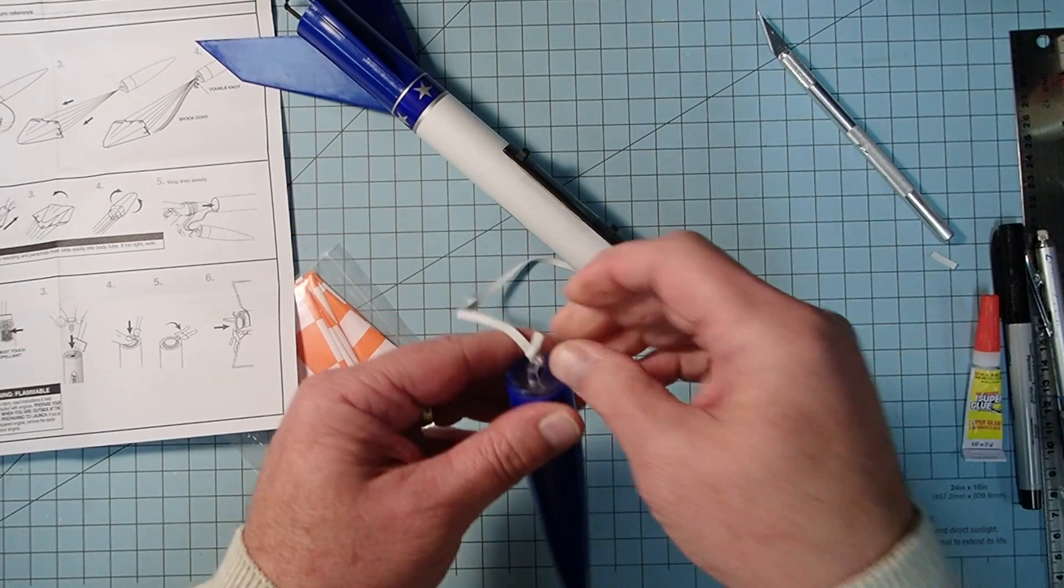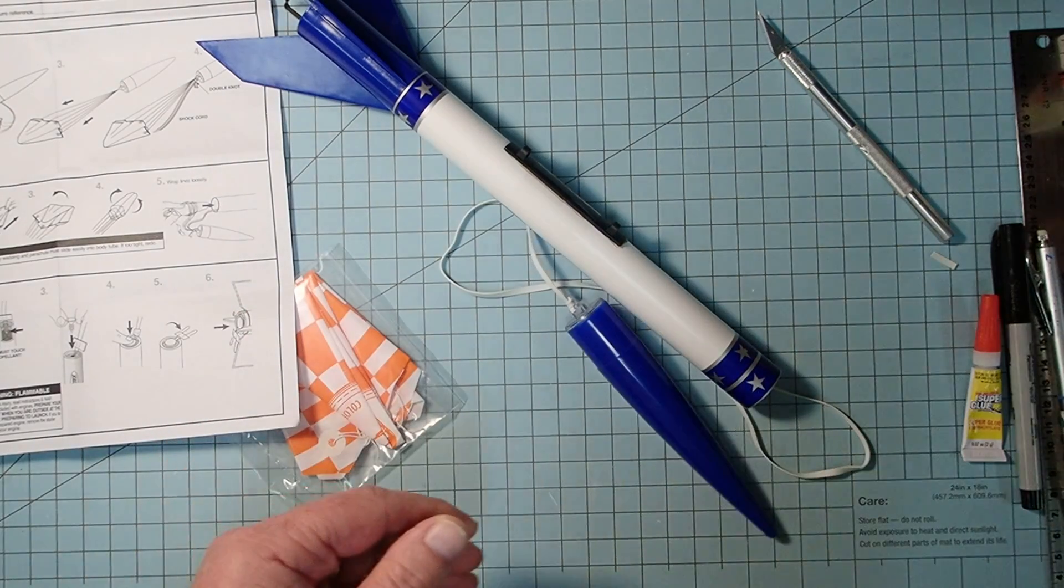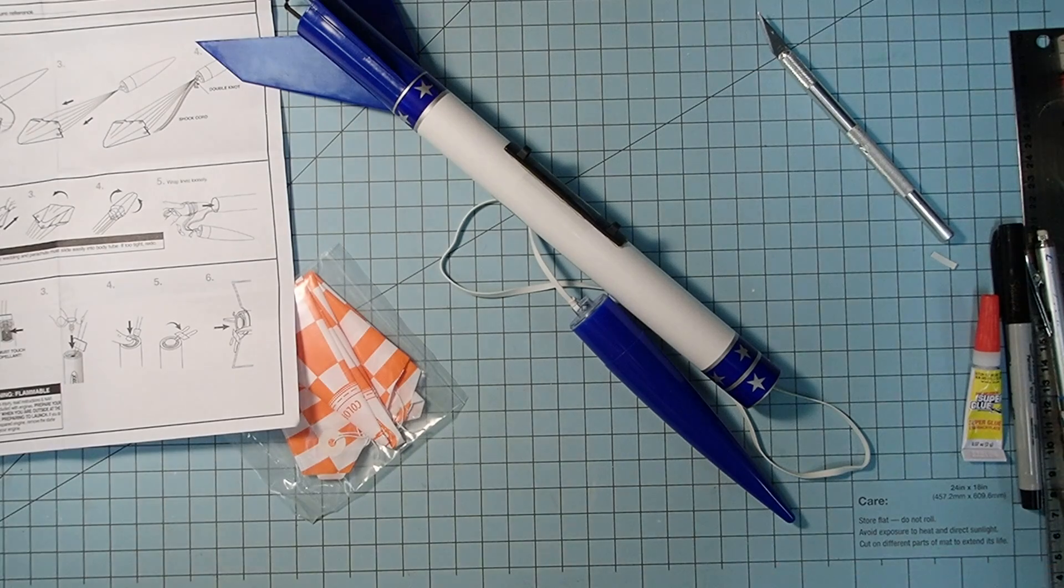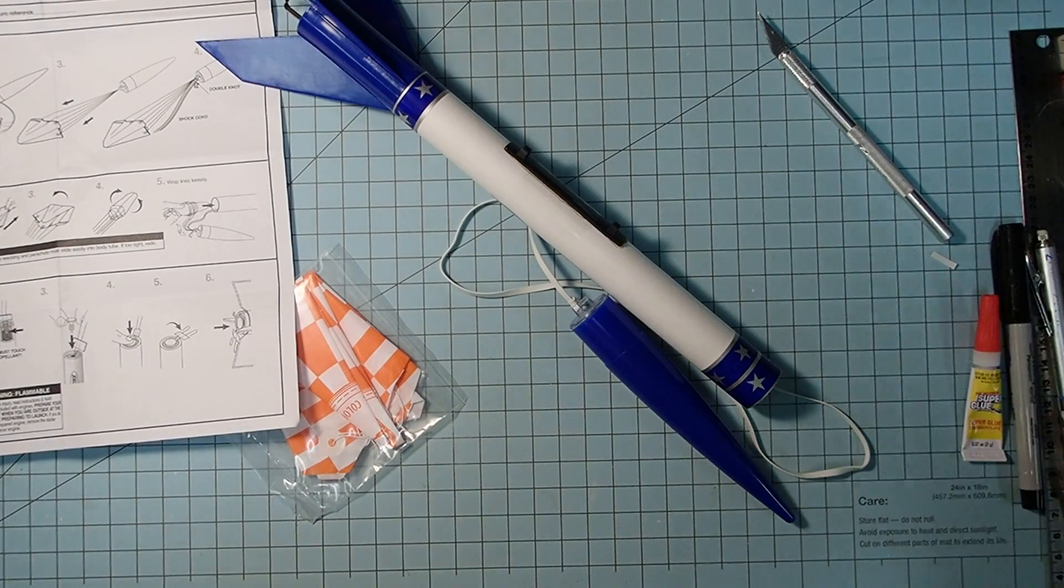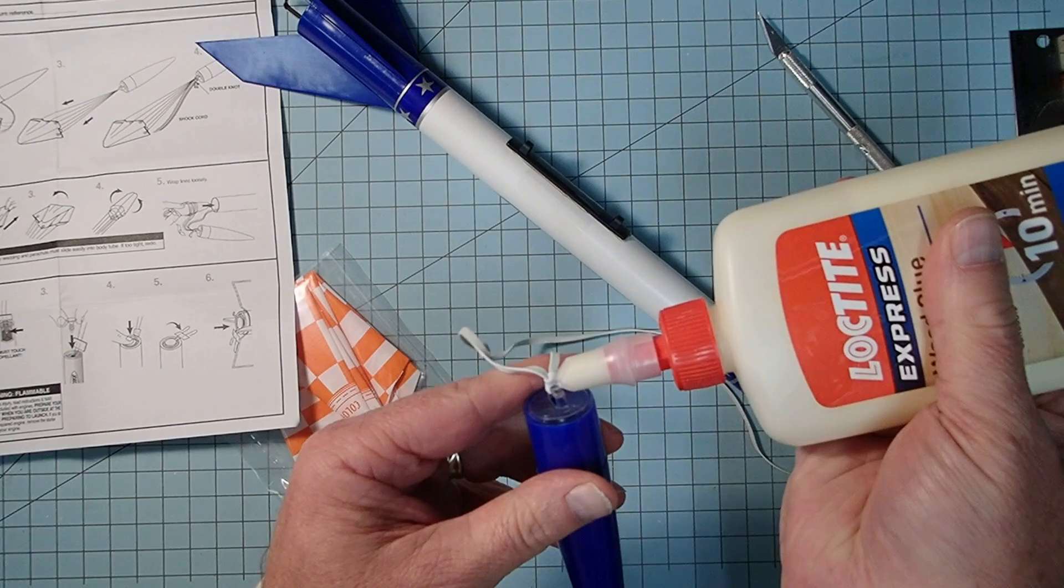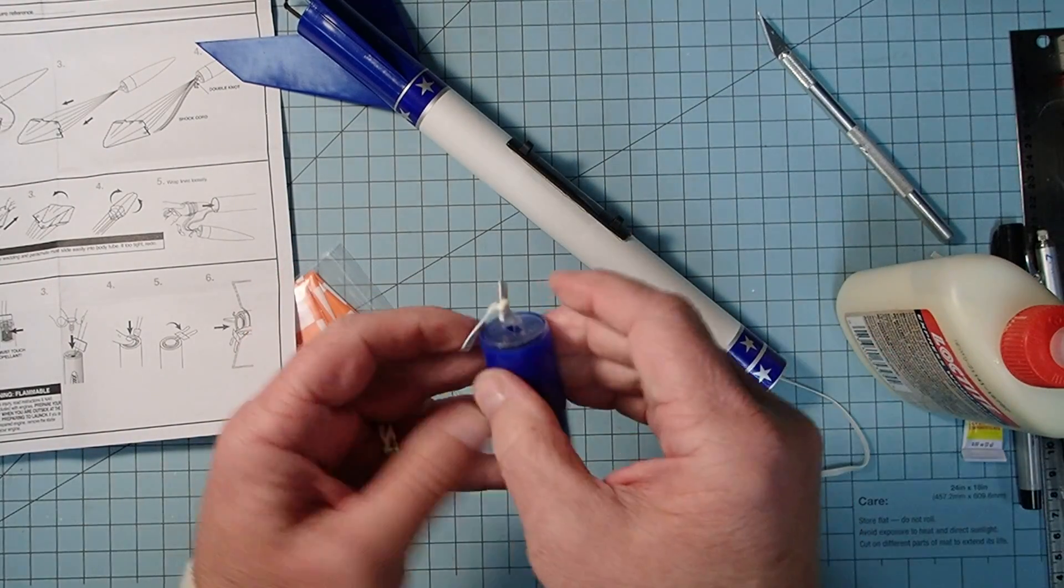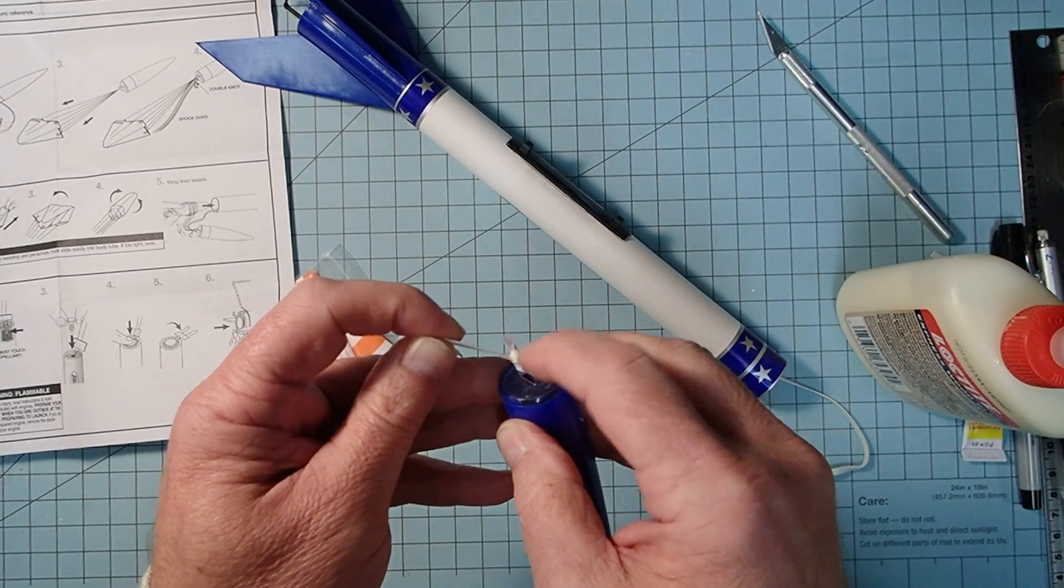Okay, and then go ahead and tug on that in different directions to make sure it's good and tight. And then I recommend putting just a little drop either of wood glue or white glue onto that knot to help make sure that it won't come loose. Okay, it doesn't take much, just a little dab there. And I'm just going to work that into the knot.